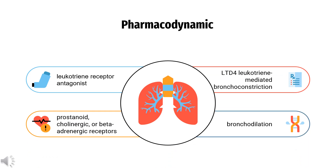Pharmacodynamics: Zileuton is an asthma drug that differs chemically and pharmacologically from other anti-asthmatic agents. It blocks leukotriene synthesis by inhibiting 5-lipoxygenase, an enzyme of the eicosanoid synthesis pathway. Current data indicates that asthma is a chronic inflammatory disorder of the airways involving the production and activity of several endogenous inflammatory mediators, including leukotrienes.